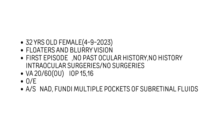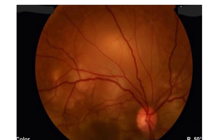We started examination; the anterior segment was normal. But when we did dilated fundus examination, we found multiple pockets of sub-retinal fluid. In this fundus photograph, it can also be seen that there are multiple areas, and superiorly there is something like a bullous retinal detachment, which looks localized in this photograph.